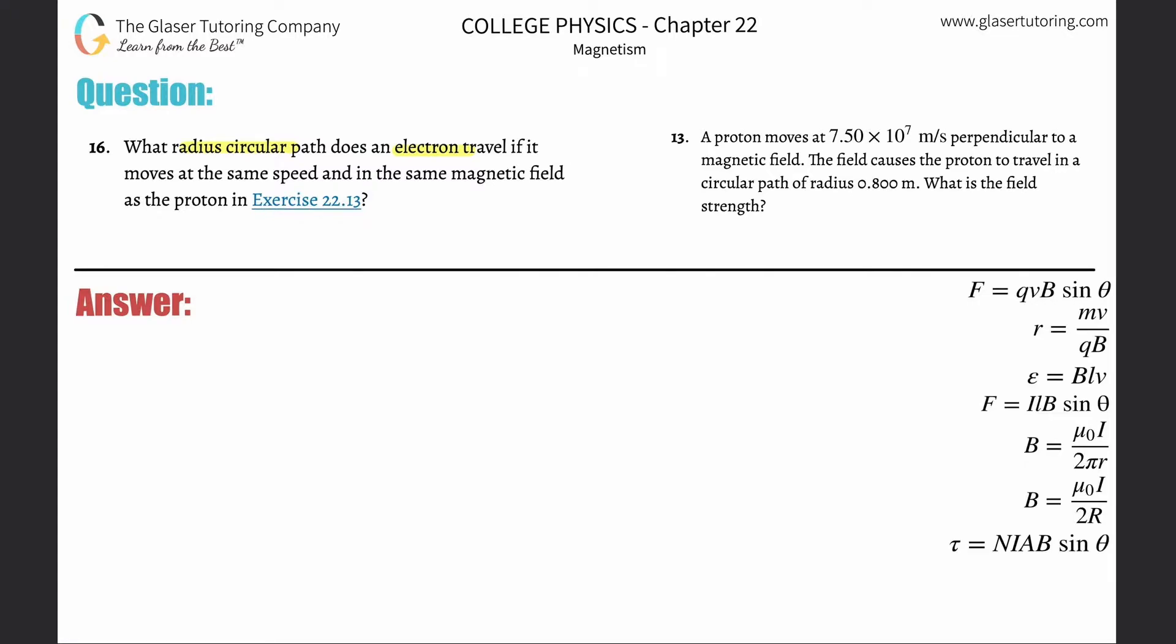Now we're just going to take the same formula and basically just change the values. The radius of an object's curvature when it's charged and moving through a magnetic field equals the mass of that moving charge multiplied by its tangential velocity, divided by the absolute value of its charge multiplied by the magnetic field strength.